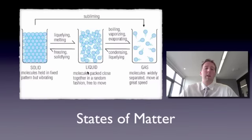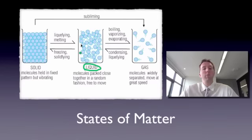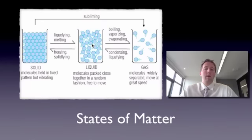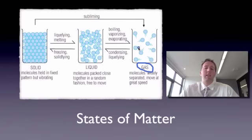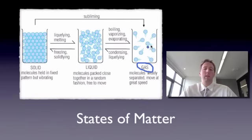The next state of matter is a liquid. The particles in a liquid are still quite close together, but they can move around each other quite a bit, and they're not as tightly packed as in a solid. The third state of matter is gas. When matter is in a gaseous state, the tiny particles zoom all over the place really fast, they're quite well separated, and they've got quite a lot of energy.